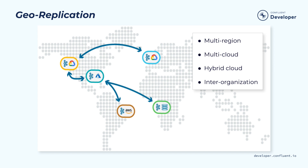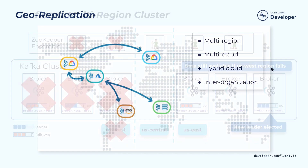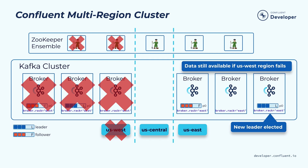We can set up a multi-region environment, whether it's within the public cloud or between on-prem and the public cloud, within an organization or across organizations — so you have lots of flexibility. Let's look at what some of the choices are in the geo-replication space. The first option is from Confluent, it's called multi-region cluster.